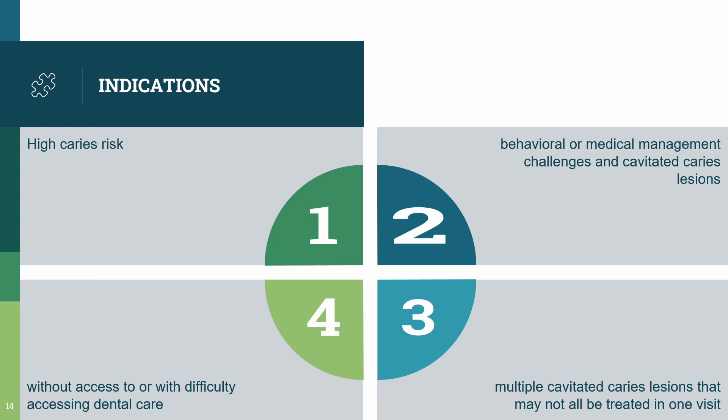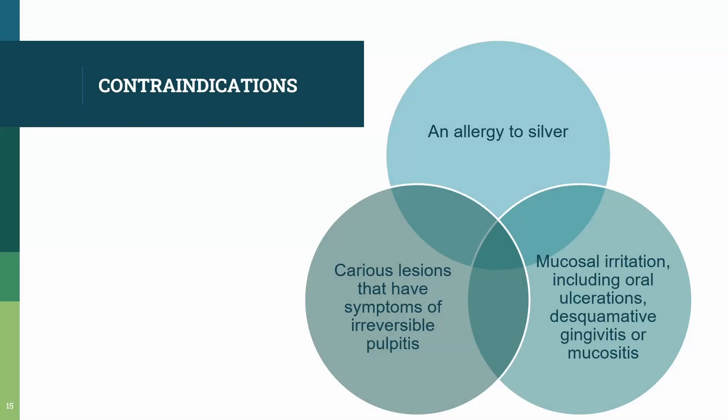Coming to the contraindications — SDF is a very safe therapeutic agent and doesn't have many contraindications. Silver allergy is a definite contraindication. Next, patients who have any sort of mucosal irritation — any ulcer, gingivitis, or mucositis — should avoid SDF, as it can be an irritant to the tissues in these cases. Finally, cases where the proximity to the pulp is more should also be avoided, as SDF can be an irritant in those situations as well.